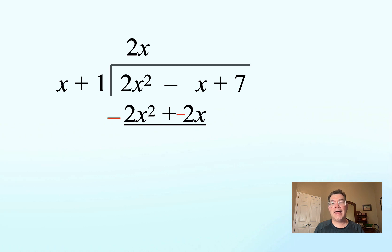Add the opposite of that and I get negative 3x. And then I will bring the plus 7 down so that I can look at the x at the front and then the negative 3x. x goes into negative 3x, negative 3 times. I multiply the entire divisor by negative 3 and I get negative 3x minus 3. Add the opposite of that and I get 10. That's my remainder because there's no terms left.